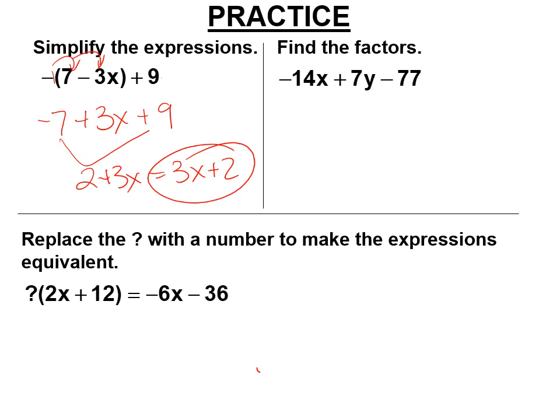Find the factors. So you're going to do distributive property in reverse. What went out here? It's clearly 7. So one of the factors is 7. There's no x or y in all of them. So what made negative 14x? Negative 2x. What made 7y? 1y. But we're going to write y. What made negative 77? I believe it was minus 11. So the other factor is negative 2x plus y minus 11. Those are the two factors.